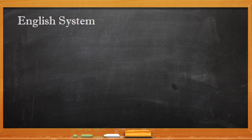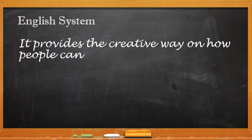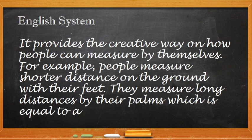The first system is the English system. It provides a creative way on how people can measure by themselves. For example, people measure shorter distances on the ground with their feet. They measure long distances by their palms which is equal to a yard. So the English system is the oldest system of measurement. It dates back to the medieval period.